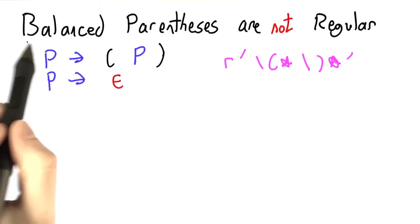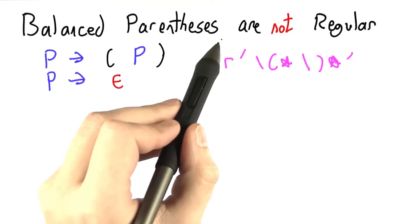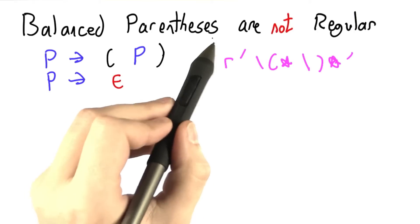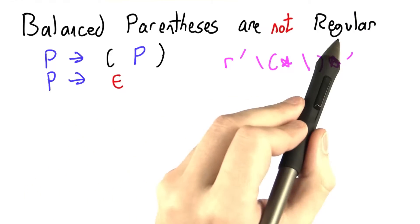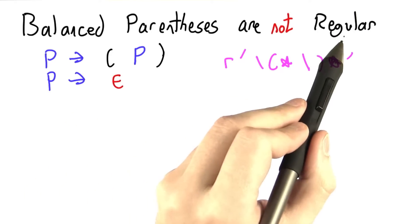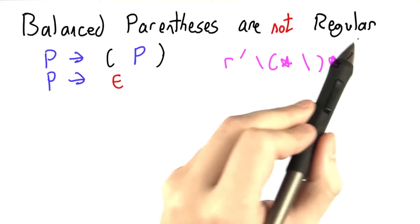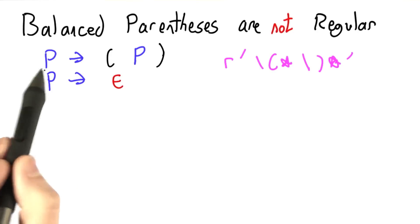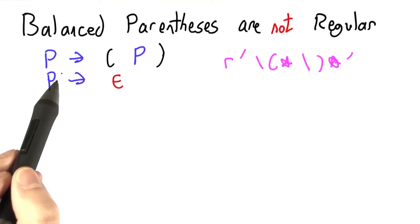It's going to turn out that balanced parentheses are one of the first things we've seen that are too complicated to be captured accurately by our old dearest friends, the regular expressions. We're going to need something like a context-free grammar to do it.